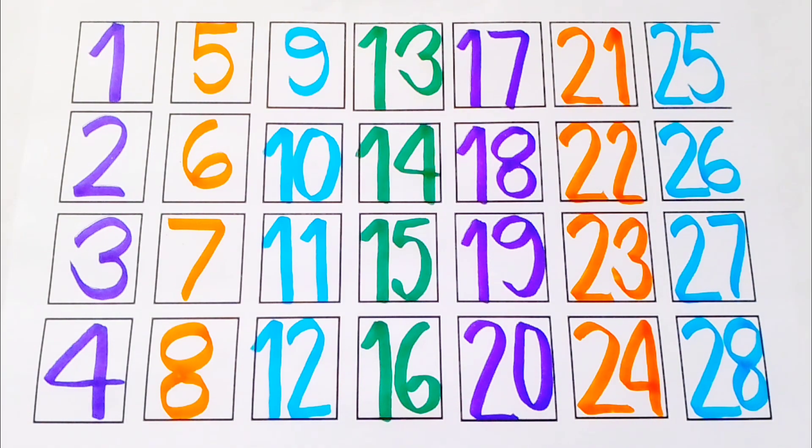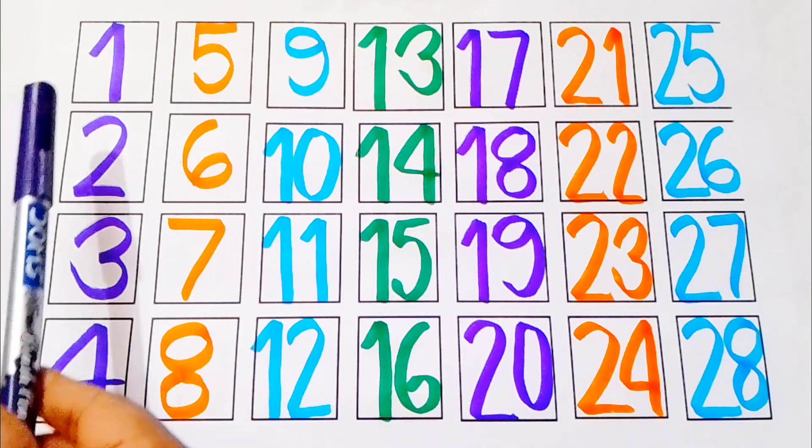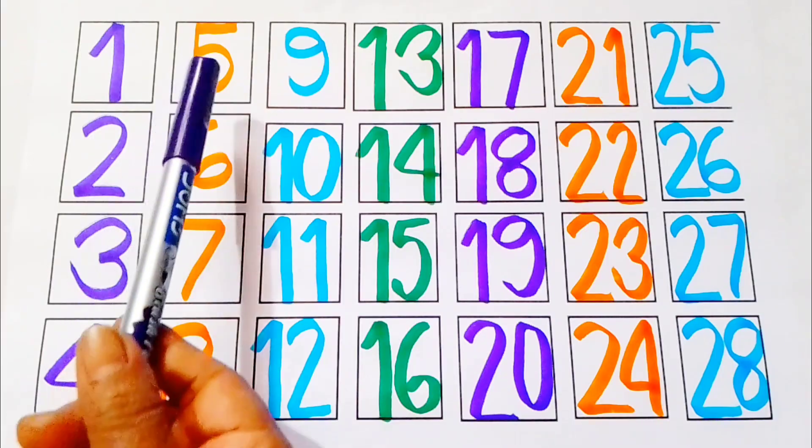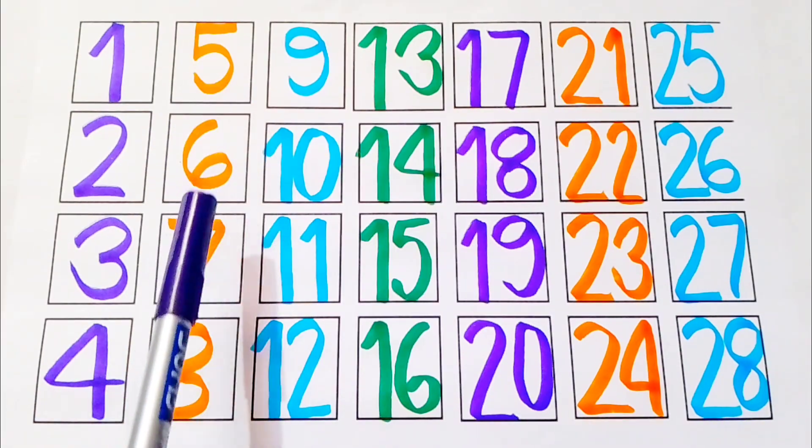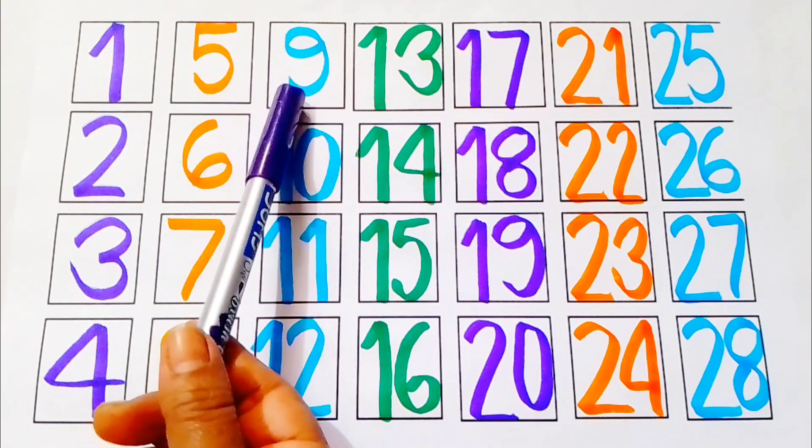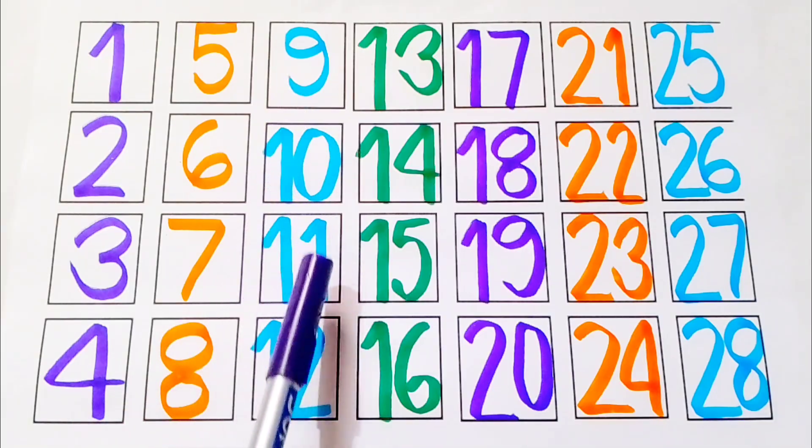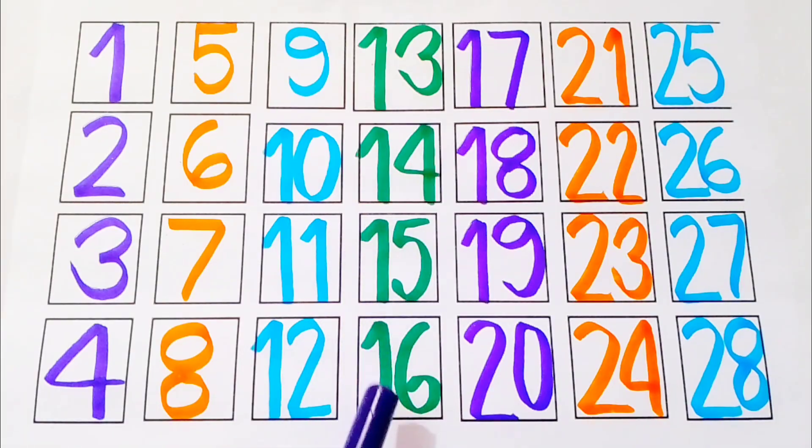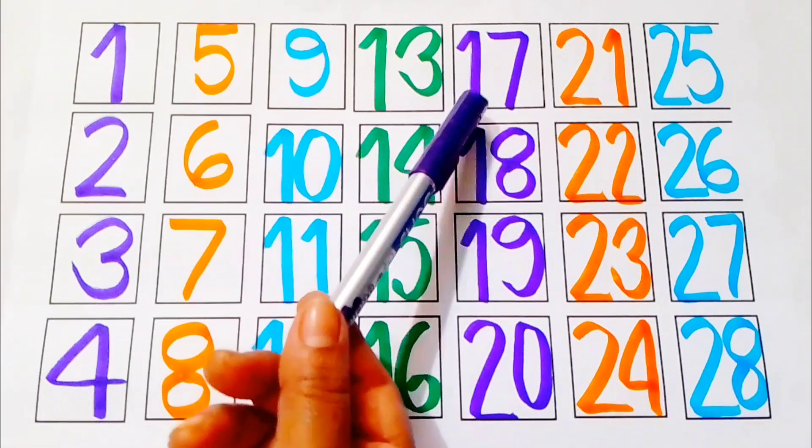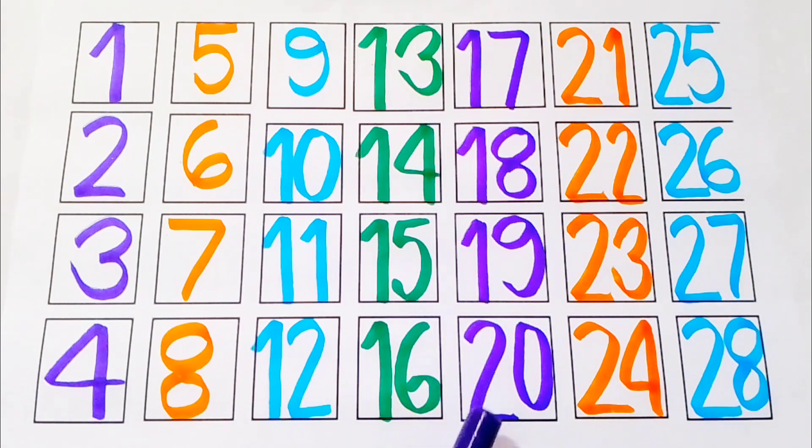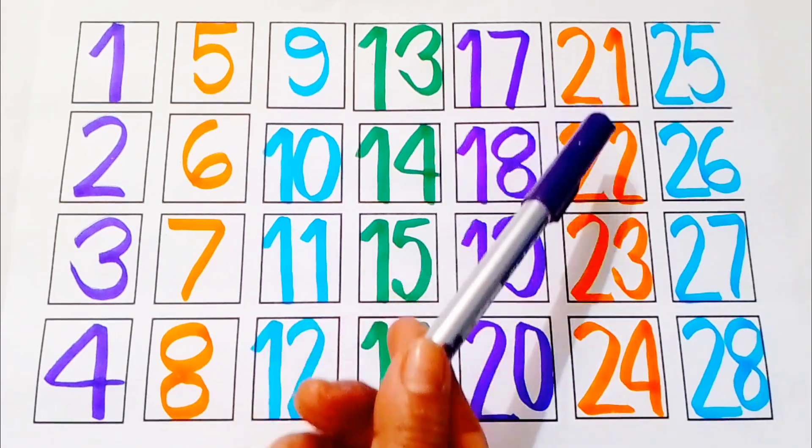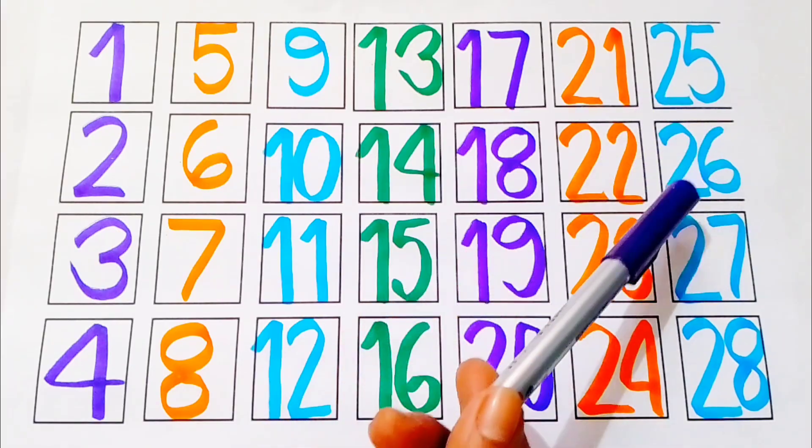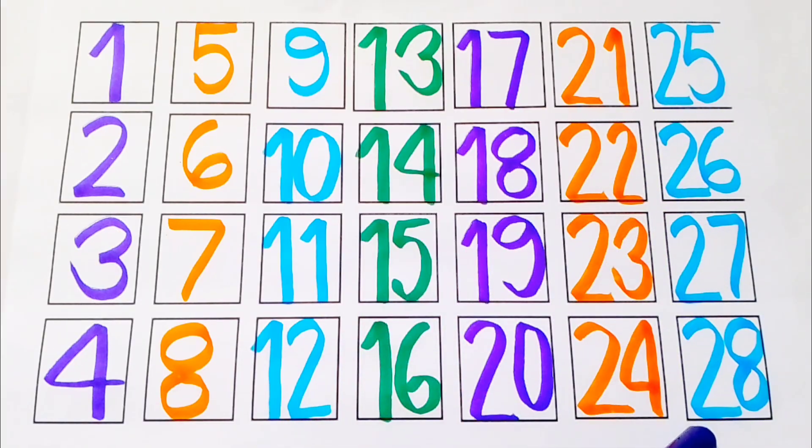Counting numbers. One, two. Three, four. Five, six. Seven, eight. Nine, ten. Eleven, twelve. Thirteen, fourteen, fifteen. Sixteen, seventeen, eighteen, nineteen, twenty. Twenty-one, twenty-two, twenty-three, twenty-four, twenty-five, twenty-six, twenty-seven, twenty-eight.